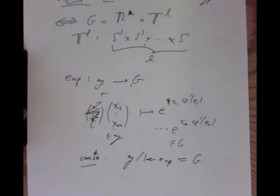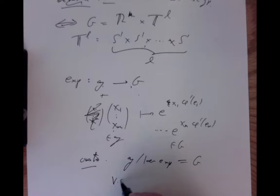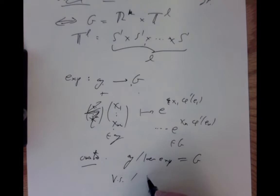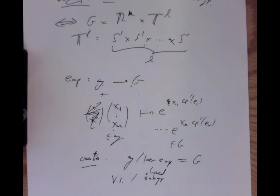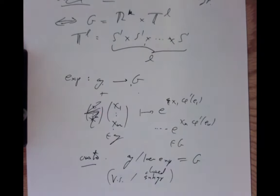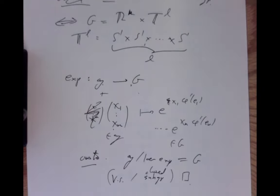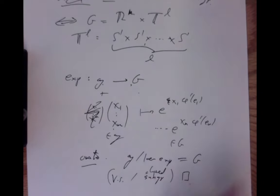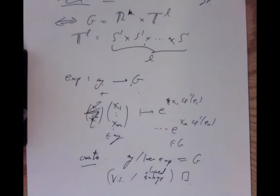We've thus identified all connected abelian Lie groups. In the notes, this is used to give another proof of the fundamental theorem of algebra. The idea is that if K containing R is a finite-dimensional field extension, then K is R or C.